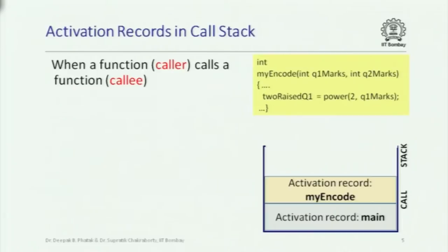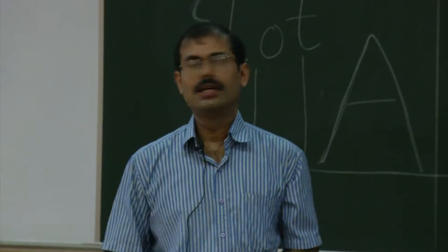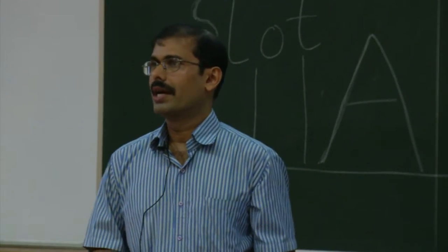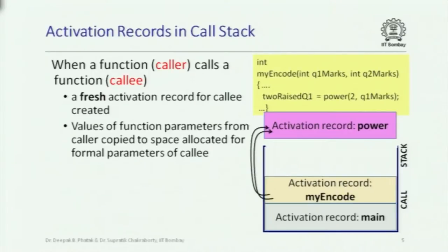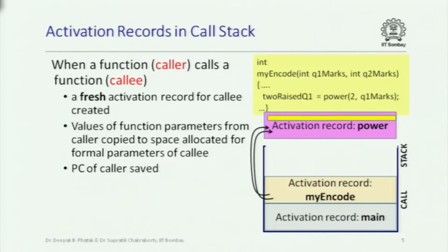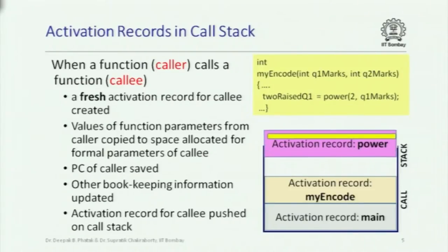The video lectures talked about activation records in the call stack. Keeping track of which function called which function and where to return is maintained in a stack — a last-in first-out access mechanism. When power is called from myencode, the activation record for power is created. In call by value, the values of the function parameters are copied from the activation record of the calling function to the activation record of the called function. The program counter value is stored — this is where execution must resume after the function returns — and then this record is pushed onto the stack.